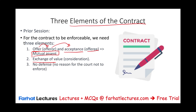The third element is no defense. Basically, this states that for the court to enforce the contract, to be an enforceable contract, there should not be a reason not to do it. For example, the contract could be for illegal merchandise — then the court will not enforce it. We'll talk about no defense in future recordings.